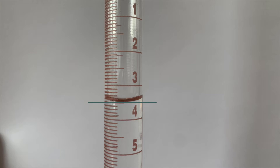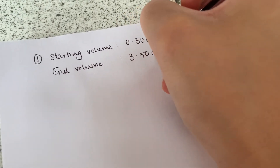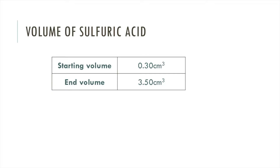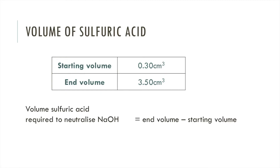Now you need to note down the final reading of sulfuric acid to two decimal places. Here are my readings from the titration. To work out the volume of sulfuric acid required to neutralize the sodium hydroxide, you subtract the starting volume from the end volume. So that would be 3.50 minus 0.30, giving a volume of 3.20 centimetres cubed. Make sure you give your answers to two decimal places.